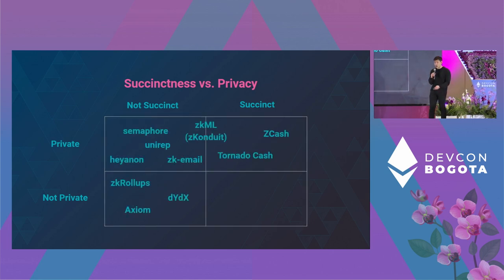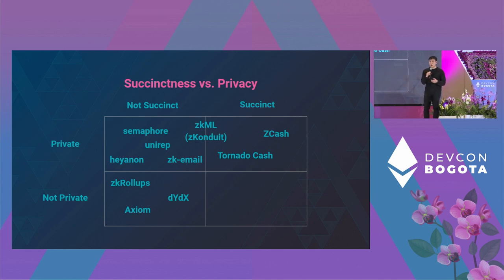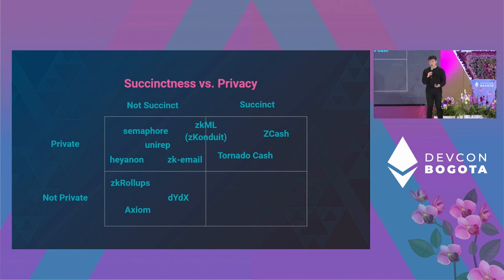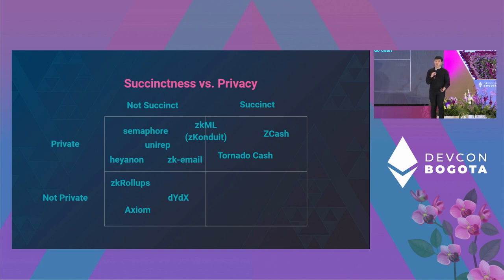In the top left, we have more social-type explorations of what you can do when you can hide information about what groups you belong to and what statements you want to make with partial revelation of information. In the bottom left, there are a lot of projects surrounding making blockchains more scalable or giving additional capabilities to decentralized applications using the succinctness property, but where everything's already public.